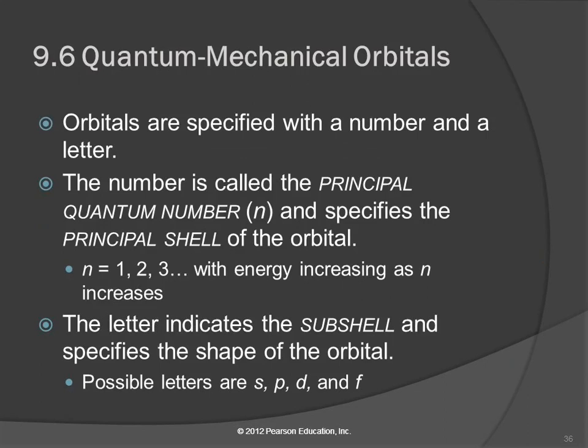Orbits just had a number — one, two, three, four, five. Orbitals have numbers and letters. We keep the principal quantum number n — one, two, three, and so on. As the quantum number increases, the energy increases and the distance from the nucleus increases, so the orbital gets larger and larger.